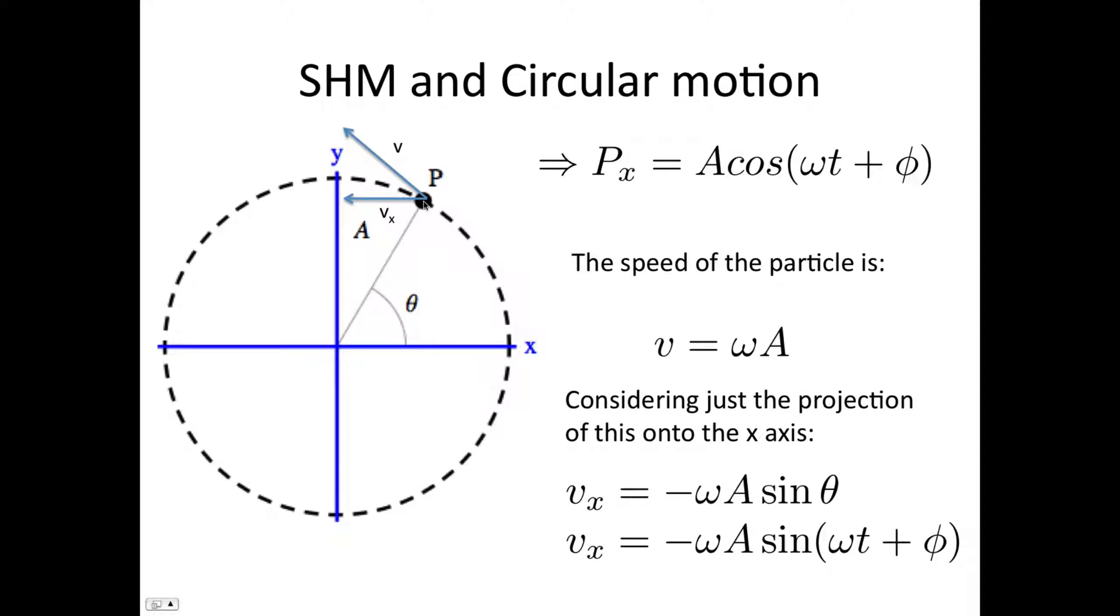Now let's consider the speed of this particle. The particle is undergoing circular motion, so its speed, v, is given by omega r. In this case, the radius is capital A, so the speed is omega A.